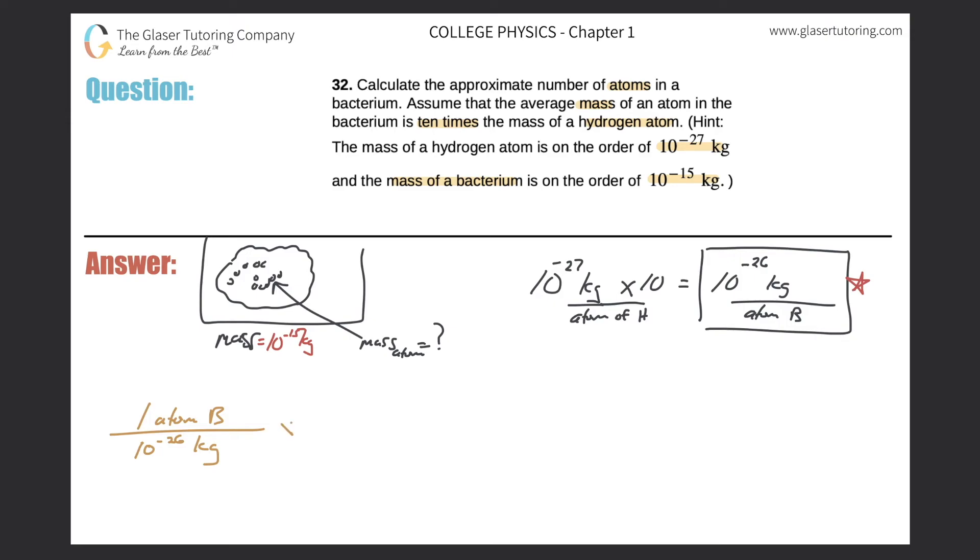Now if I take this ratio and I multiply it then by the mass of the whole bacterium, which was 10 raised to the negative 15 kilograms, that will now tell me the number of atoms, because notice the kilograms will cancel. And therefore the only unit that's left would be atoms of bacterium. So that's the unit that I'm going to write down over here, atoms of the bacterium. And now all I have to do is take 10 raised to the negative 15 and divide it by 10 raised to the negative 26. And that gives me 1 times 10 to the 11, atoms of bacterium.